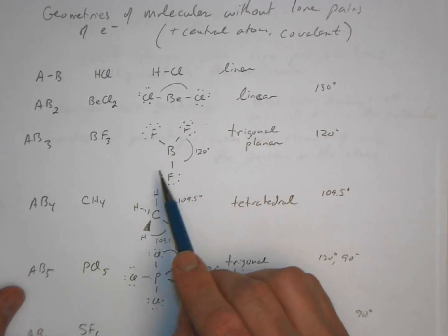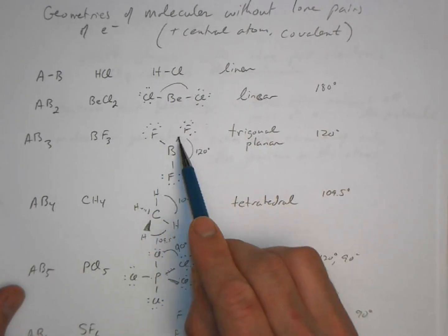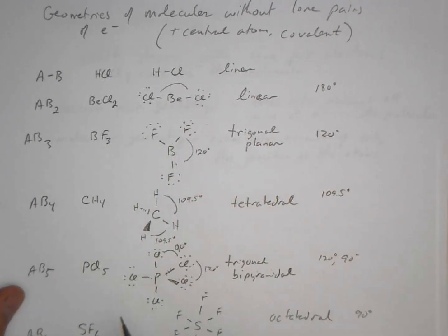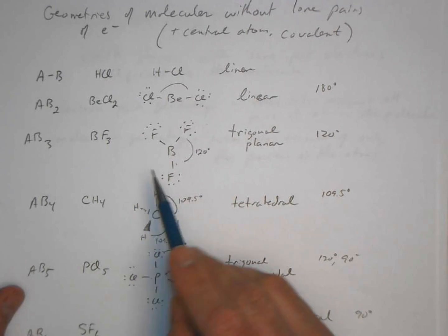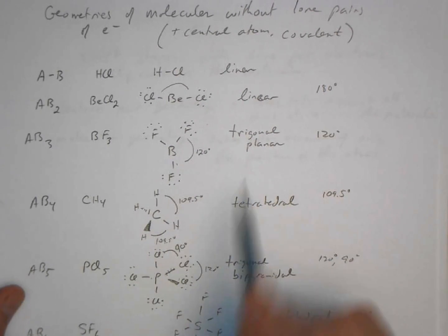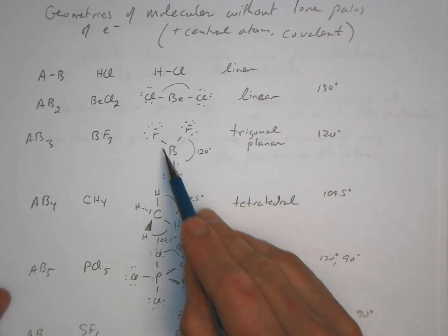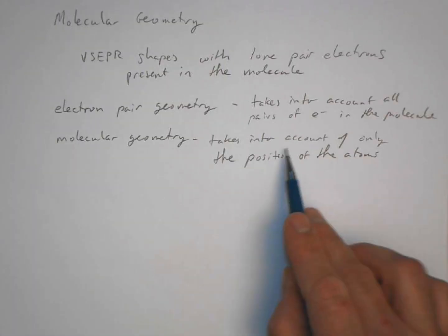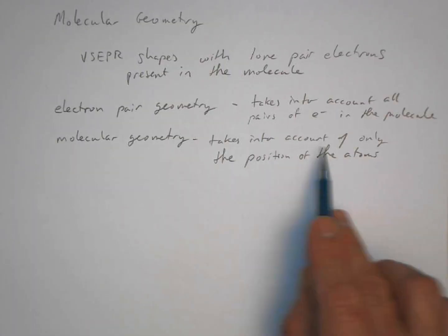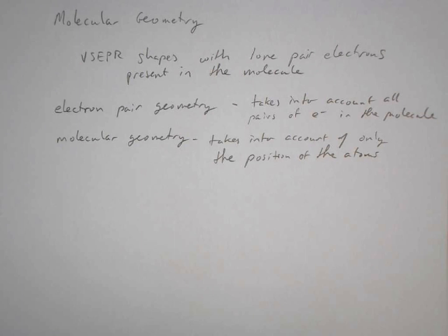In the BF3 example from the previous lecture, the electron pair geometry has three electron pairs around the central atom, and the molecular geometry would be the same — because we have three electron pairs and they all happen to be bonding pairs of electrons. The positions of the atoms are determined by the bonding pairs.